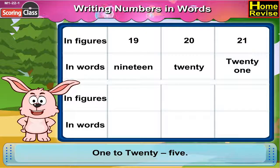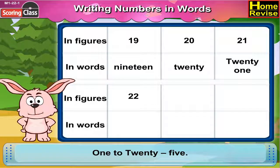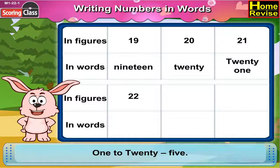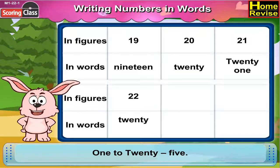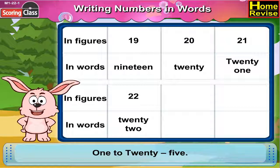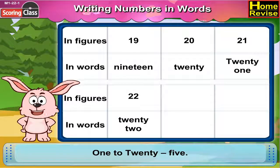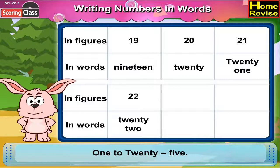22 in figure is 2, 2. In words it is T, W, E, N, T, Y, T, W, O.